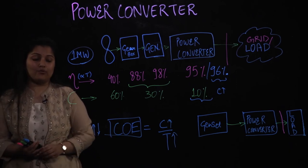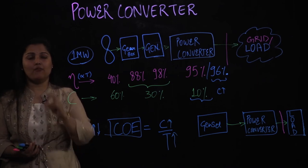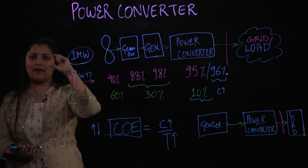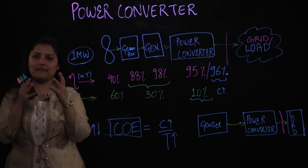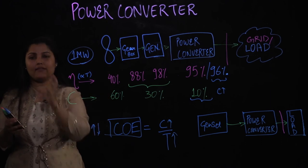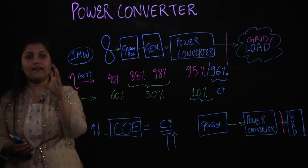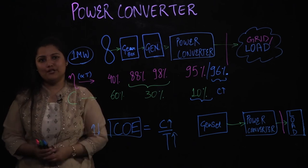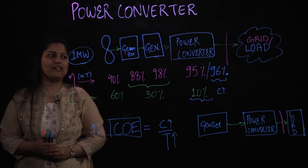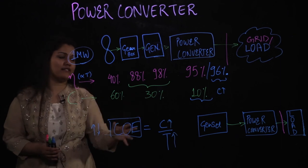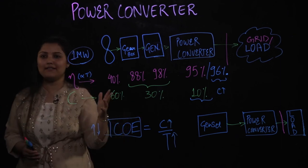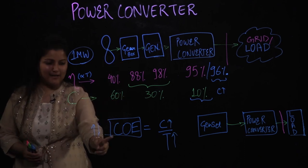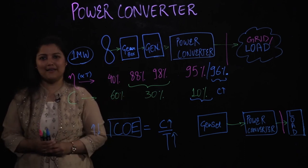Another example is for a solar system: you can have module-based inverters where one PV panel has its own small micro-inverter, or you can have a central string inverter where multiple PV panels connected together share one power converter. In both cases you can compare the cost of energies. With that, I'd like you to think about different resources — wind, solar, diesel gensets — and design your optimum systems with an optimized power converter, thinking about cost of energy and net present value.